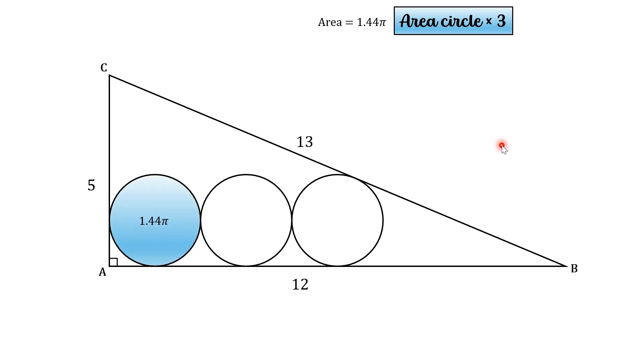And because they're all the same, now we simply just need to multiply the value of the one circle by 3. So it's 1.44 pi times 3, which is 4.32 pi, or 13.57 units squared to two decimal places.